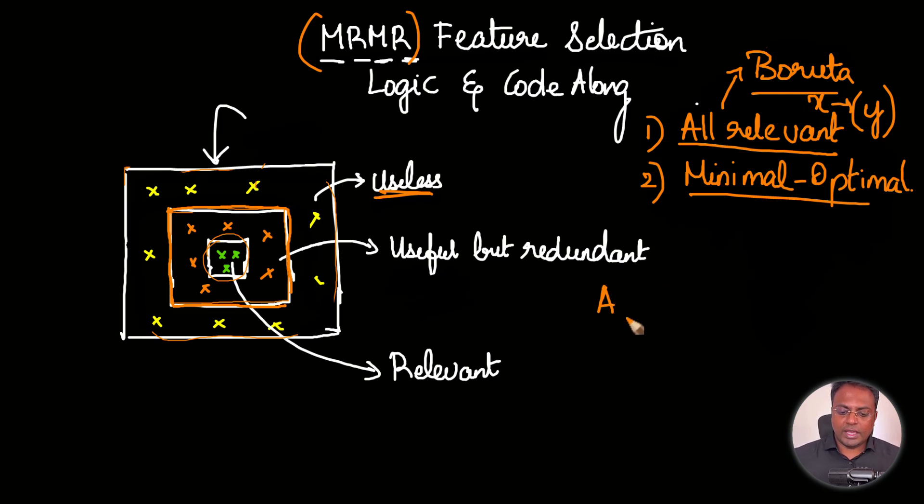What I mean by this is, let's say you have two features A and B. Both A and B are useful in predicting the Y. But if A and B themselves are explaining each other, meaning if A and B are correlated to each other, or if the sum of the information contained in A is also present in B, or at least most of the information is also present in B, then they are sort of redundant.